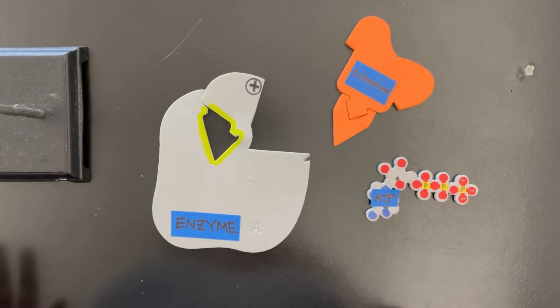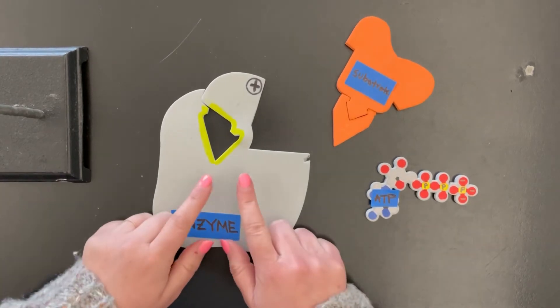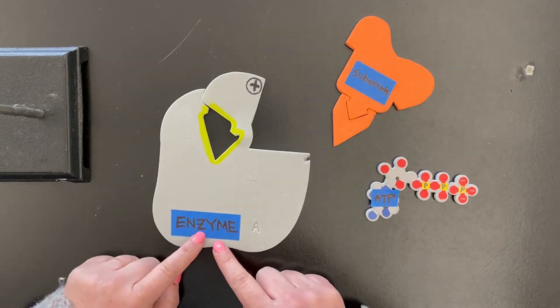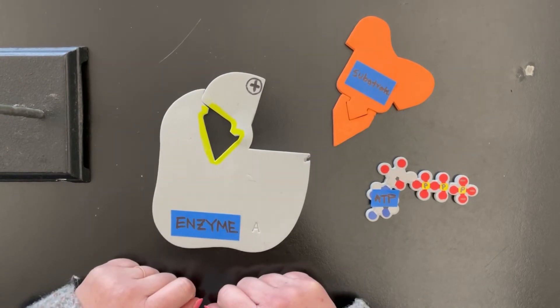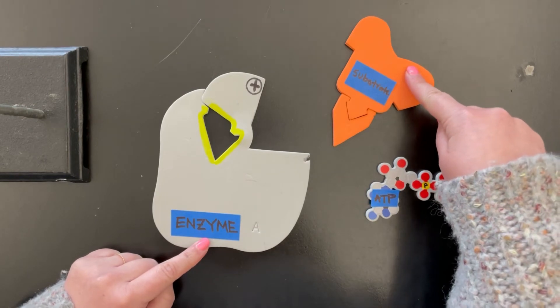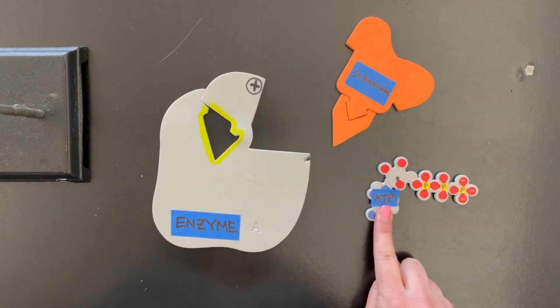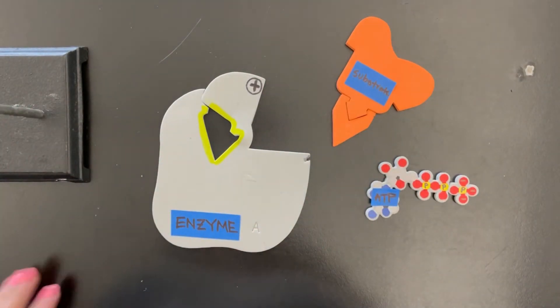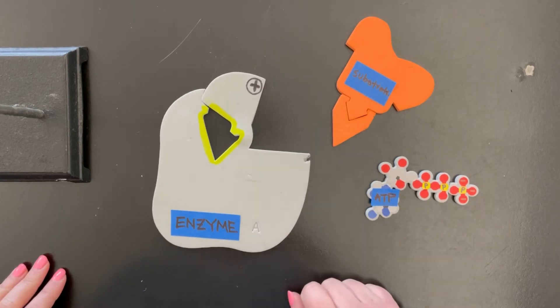All right, so there are three players in our example here. The first is the protein that's going to become phosphorylated. In this example, it's an enzyme, and since it's an enzyme, I'm also going to talk about its substrate, and then we also need a molecule of ATP. What is not pictured here in this model is a kinase, which is the enzyme that will actually phosphorylate this protein.